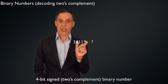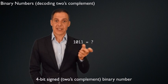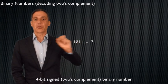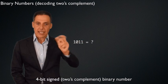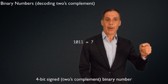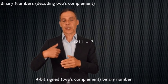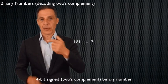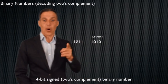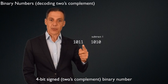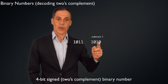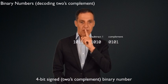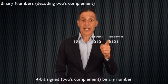On the other hand, take 1011. The leading 1 tells me it's negative, which means I have to undo the two's complement. How do I undo it? I subtract one and then flip all the bits — that's the inverse operation. Subtracting 1 from 1011 gives 1010. Flipping all the bits: the 1 becomes 0, the 0 becomes 1, the 1 becomes 0, the 1 becomes 0, giving 0101. There's a zero in the sign position, which is a good sign.